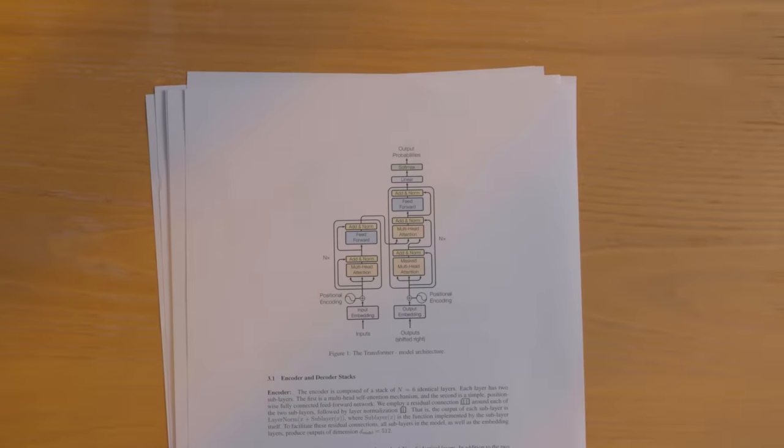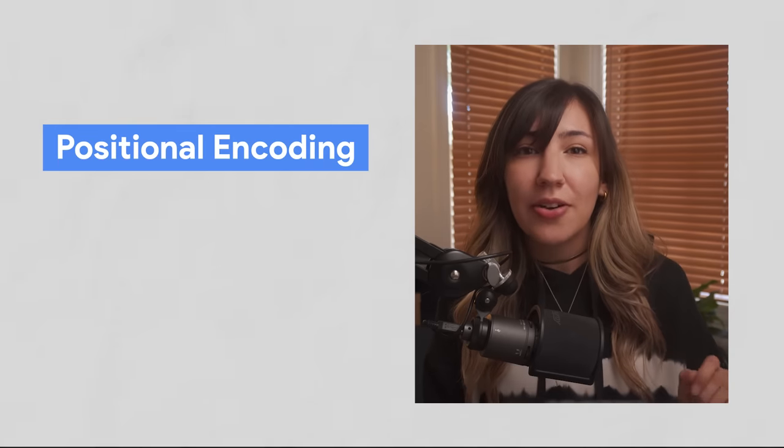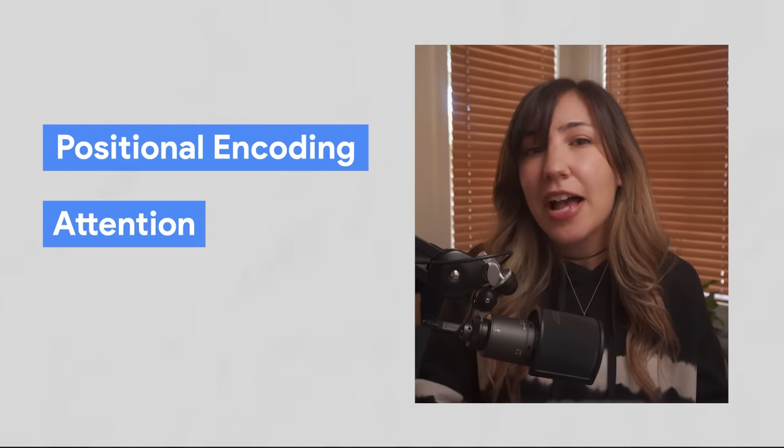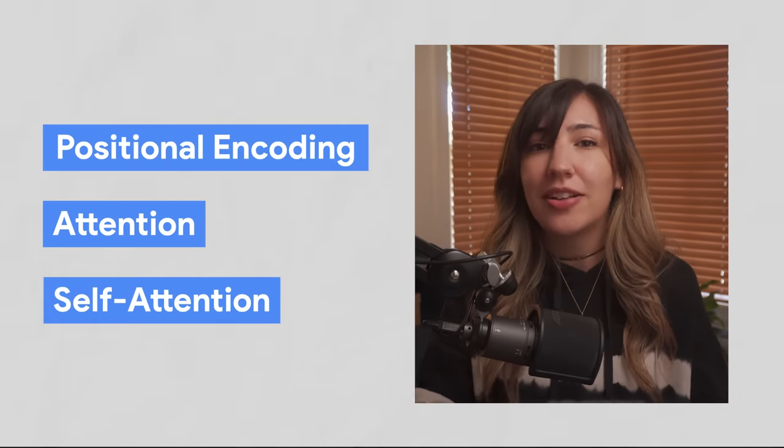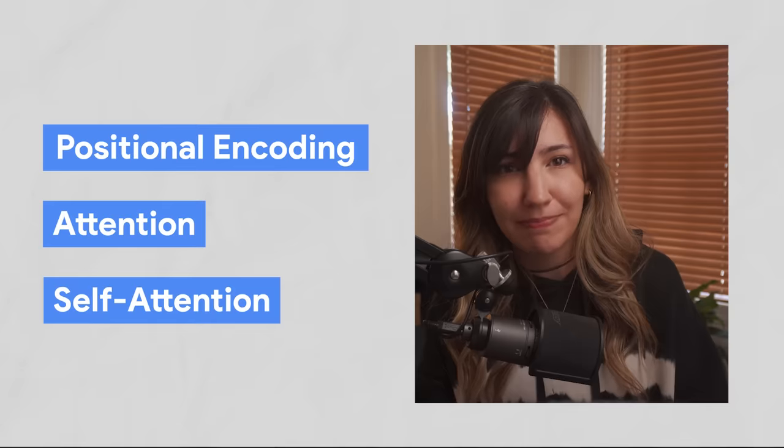So how do these things actually work? From the diagram in the paper, it should be pretty clear. Or maybe not. Actually, it's simpler than you might think. There are three main innovations that make this model work so well: positional encodings and attention, and specifically a type of attention called self-attention. Let's start by talking about the first one, positional encodings.